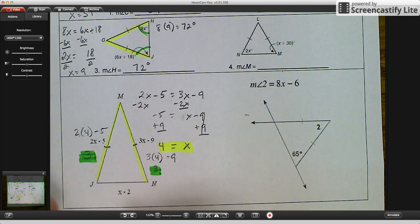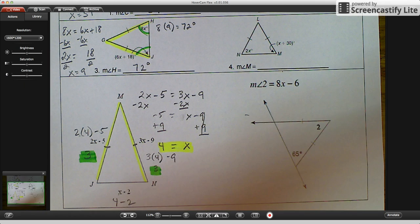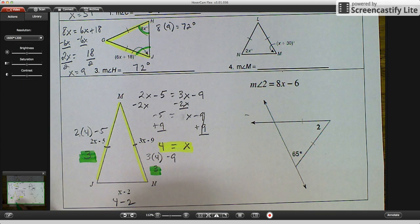And then the base side, the base of our isosceles would be X minus 2, which is 4 minus 2, which is 2 units in length. So that's how you would figure out the length.